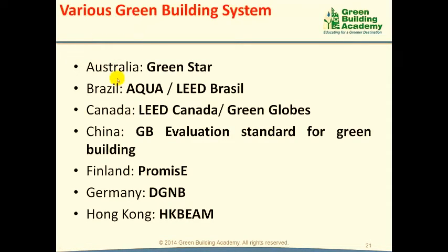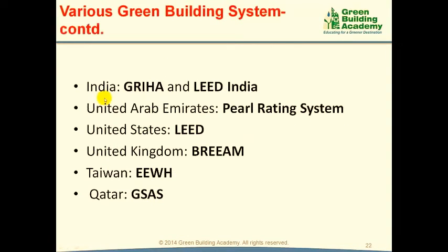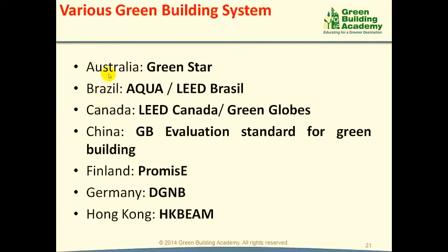To name a few: In Australia, Green Star is used. Brazil uses Aqua or LEED Brazil. Canada uses LEED Canada or Green Globes. China has the Green Building Evaluation Standard. Finland has Promise. Germany uses DGNB. Hong Kong has HK BEAM. India has GRIHA and LEED India. UAE uses the Estidama Pearl Rating System. USA uses LEED. UK uses BREEAM. Taiwan uses EEWH. Qatar uses GSAS. Most of these rating systems are specific to a country — for example, Green Star certifies buildings only within Australia.